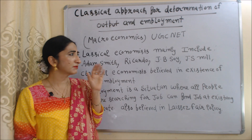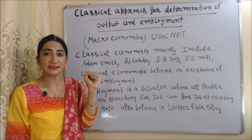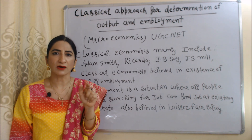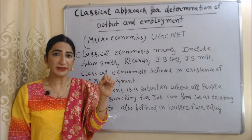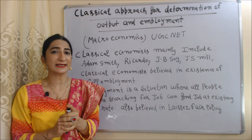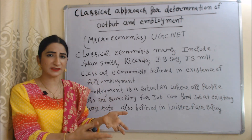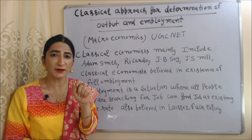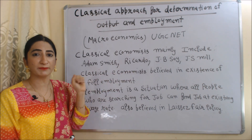Classical economists mainly include Adam Smith, Ricardo, J.B. Say, and J.S. Mill. Classical economists believed in the existence of full employment. Full employment is a situation where all people who are searching for a job can find a job at the existing wage rate. Classical economists believe there is existence of full employment in the economy.